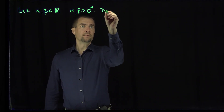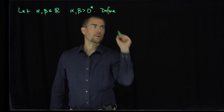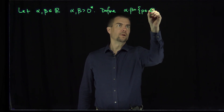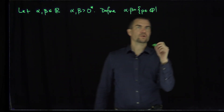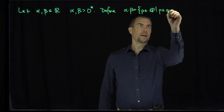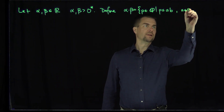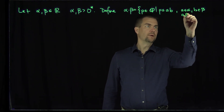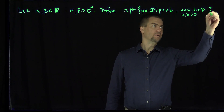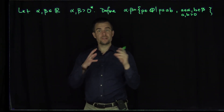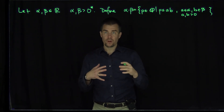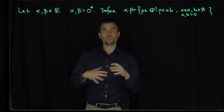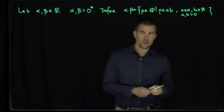We're going to define alpha dot beta to be the set of P in Q, such that P is less than or equal to A times B, where A is in alpha, B is in beta, and A and B are greater than zero. This will be the definition of multiplication on non-negative real numbers. If the real numbers are negative — both negative, or one negative and one positive — we'll just use the sign convention to define multiplication for those real numbers.